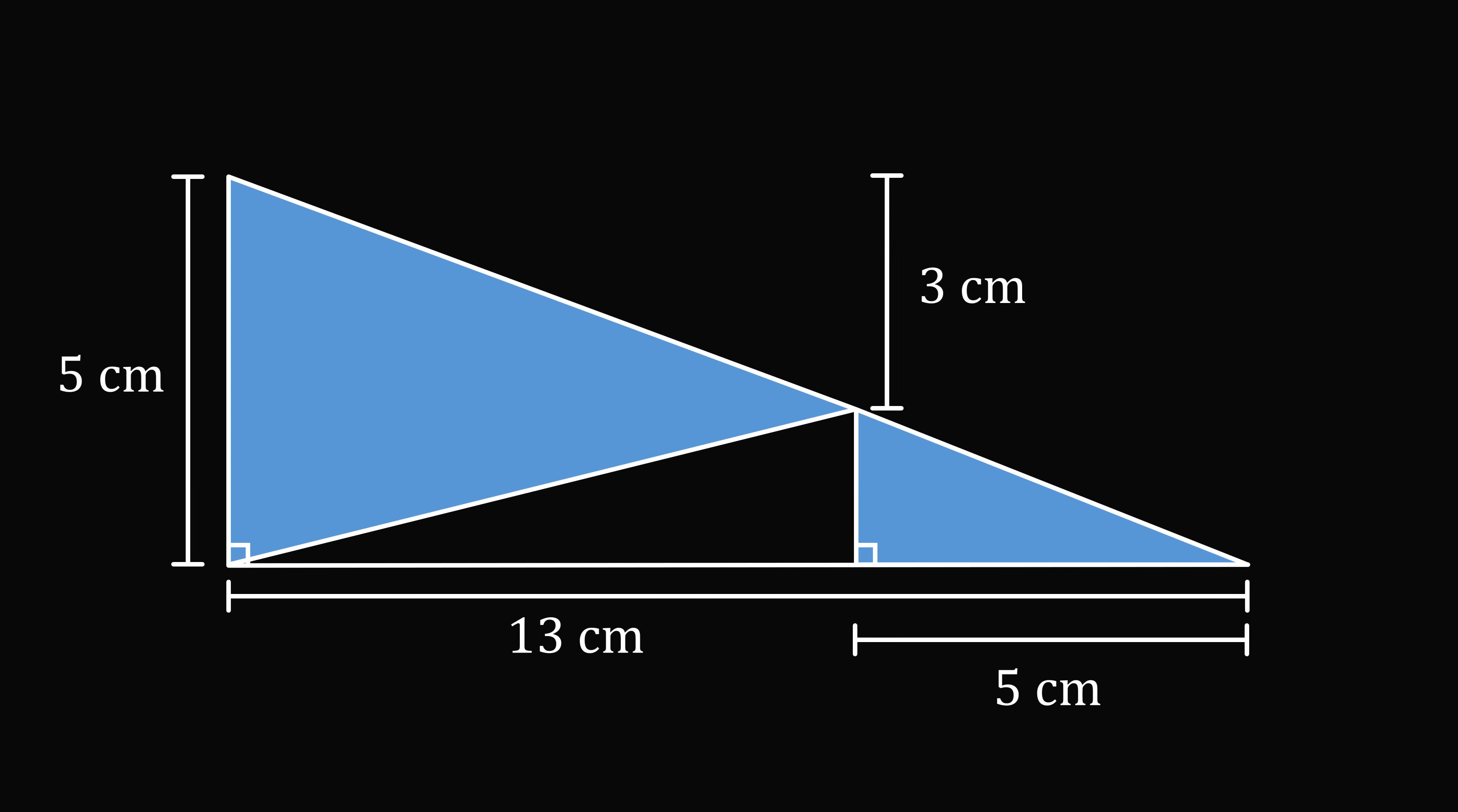So first, let's calculate the height of the blue triangle on the right. So the total figure has a height of 5 cm. Then we have 3 cm to the top. So 5 minus 3 is equal to a total of 2 cm. So that's the height of the triangle on the right. Now, we know that the total base is 13 cm. So if we take 13 minus 5, the remaining length will be equal to 8 cm.